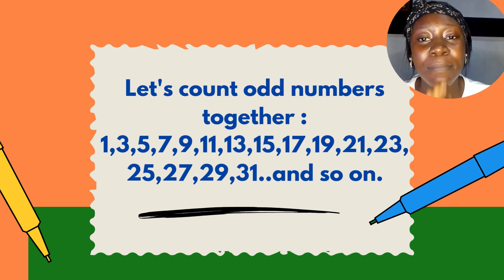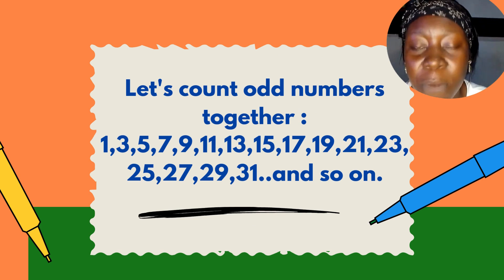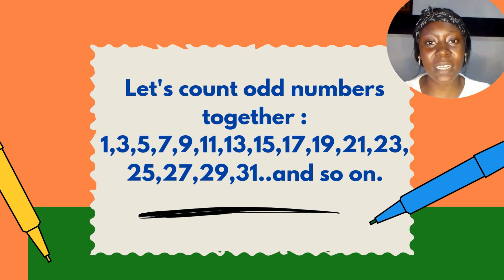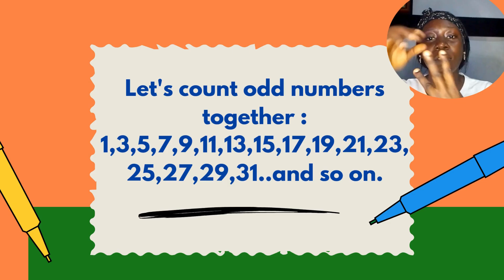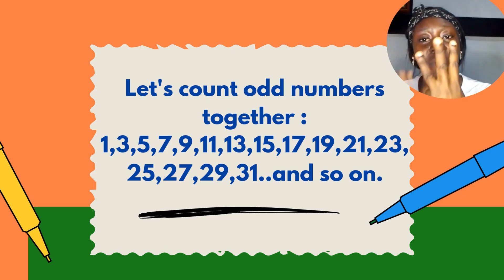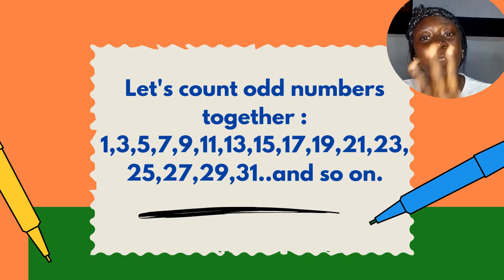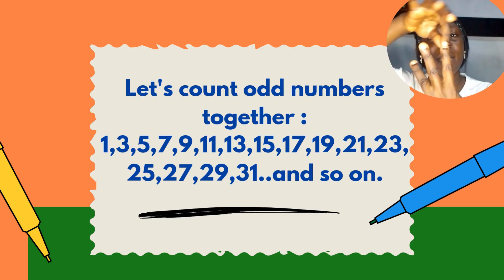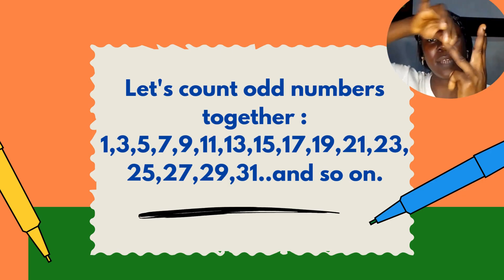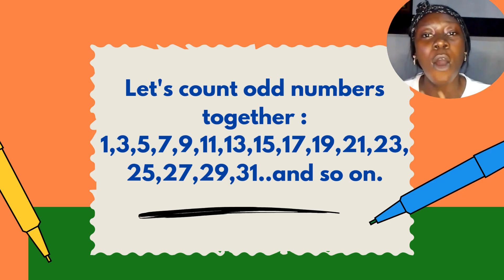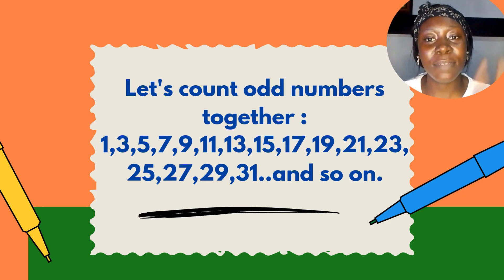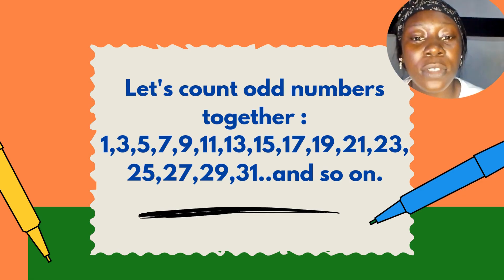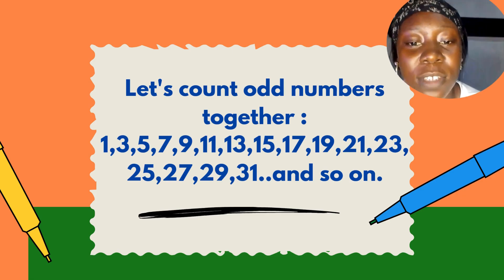They can't be divided by two. Remember, odd numbers cannot be divided by two. For example, you count three: one, two, three. Can you divide three by two without a remainder? No. If you try, you count one, two — there will be a remainder of one. So odd numbers are numbers that can't be divided by two.